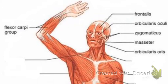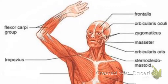Flexor carpi group allows you to flex your fingers, which means bringing them closer to your palm. Sternocleidomastoid is what allows you to turn your head side to side. Trapezius is what shrugs your arms up and down and pulls your shoulder closer to your head. Deltoid is what allows you to lift your arm laterally to the side; it wraps around front and back, so we'll see deltoid again. Latissimus dorsi is what pulls your arm back down, so it works the opposite of the deltoid.